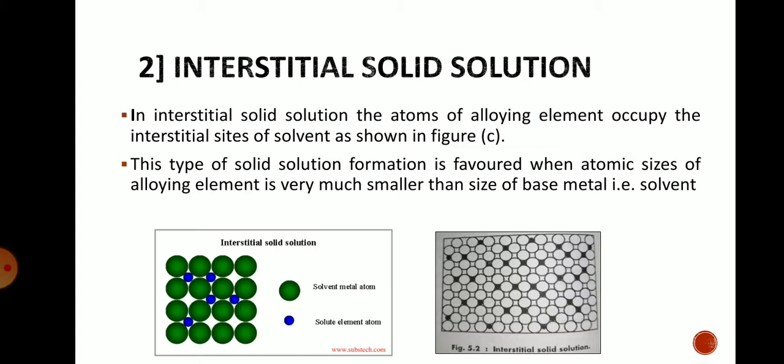The second type of solid solution is the interstitial solid solution. In this type, the atoms of the alloying element occupy the interstitial sites of the solvent. Wherever interstitial gaps exist between the solvent atoms, the solute atoms occupy those positions. In the diagram, green represents the solvent and blue represents the solute atoms filling the interstitial gaps.